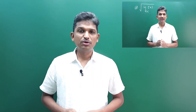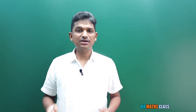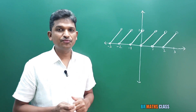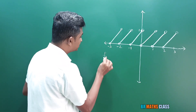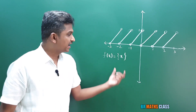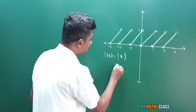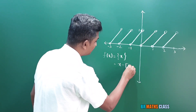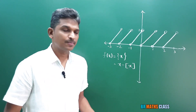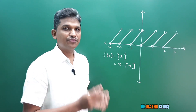To understand today's problems, it is important you must know what is fractional part function. This is the graph of fractional part function. Fractional part function is denoted as f(x) equal to {x} — this flower bracket notation. This is fractional part of x. This is also written as x minus ⌊x⌋. Fractional part of x is nothing but x minus ⌊x⌋. Now, observe what is the domain and range of fractional part function.